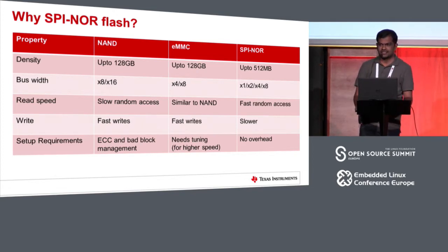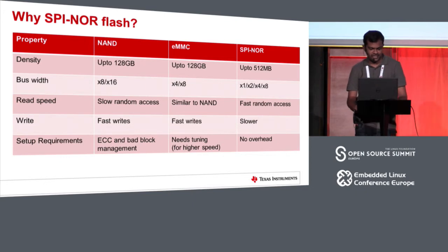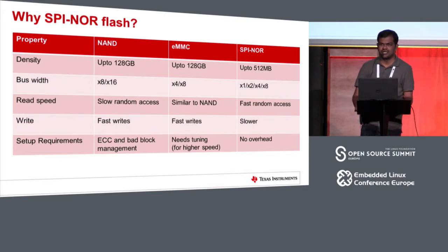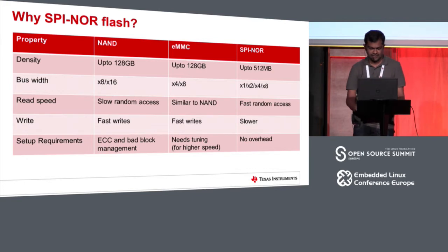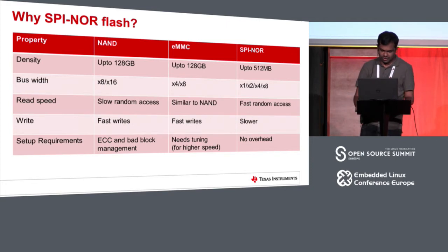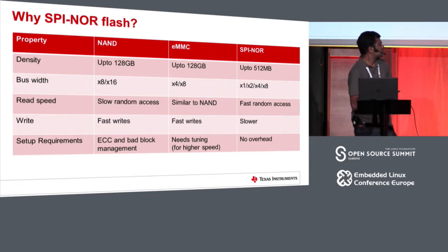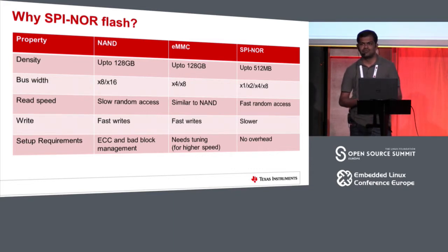In terms of writes, NAND and eMMC are usually faster when compared to SPI NOR. NAND technology is not quite reliable — it suffers from random bit flips and poor write endurance, hence we need ECC and bad block management, either in software or in hardware. eMMC needs tuning to support higher speed operations, but SPI NOR has no such software overheads. All this reliability, fast random access, and reduced number of pins makes SPI NOR an ideal boot media, and it's most commonly a primary or backup boot media in embedded devices.